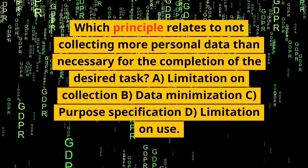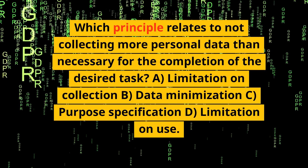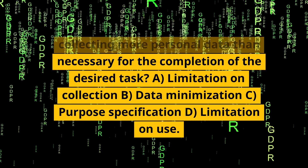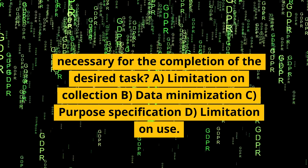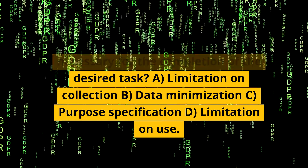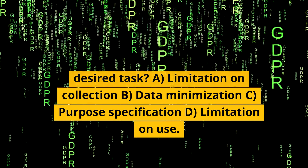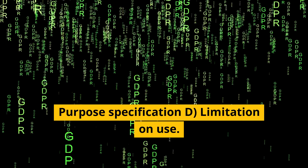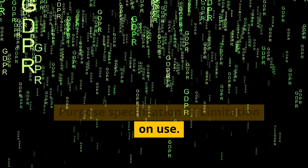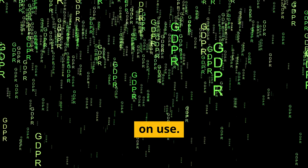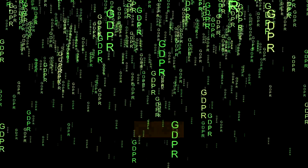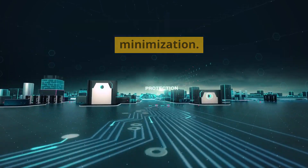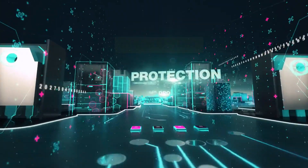Which principle relates to not collecting more personal data than necessary for the completion of the desired task? A. Limitation on collection. B. Data minimization. C. Purpose specification. D. Limitation on use. Correct answer: B. Data minimization.